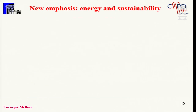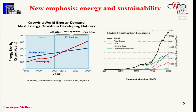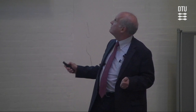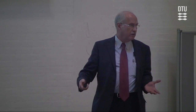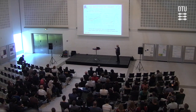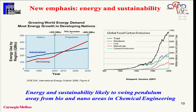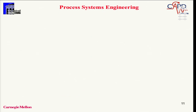Things are changing. The emphasis on bio and nano has been real, but more recently there's a new emphasis on energy and sustainability. In energy, there's an expected 70% increase in demand over the next 25 years. How to supply that energy is a major challenge. We're also facing increasing CO2 emissions with possible climate change implications — problems that belong very much to chemical engineering. Energy and sustainability will probably emerge as major trends that may swing the pendulum somewhat away from bio and nano, though bio and nano will remain important.